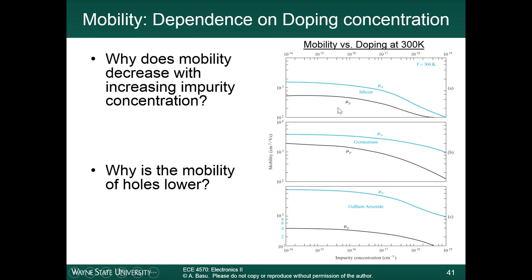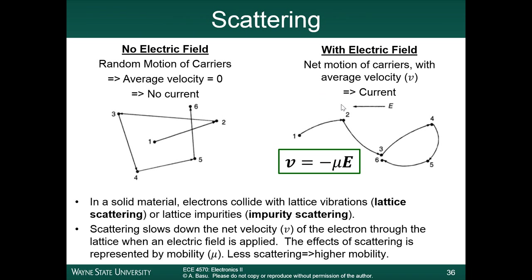We also notice that the mobility for electrons, mu_n, is higher than the mobility of holes, mu_p, and this is the case with all three materials: silicon, germanium, and gallium arsenide. In the case of gallium arsenide, the ratio between mu_n and mu_p is quite large — electrons have relatively high mobility, higher than silicon, but the hole mobility is approximately the same or a little bit lower. In germanium they are a little bit closer, and in silicon you have about a factor of 3 difference in the mobility of electrons and holes. Holes have a larger effective mass than electrons, so if you look at the mobility equation, holes have a larger effective mass, so they end up having a lower mobility.